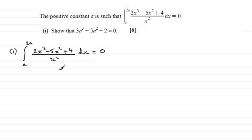Now we need to get this in the form that is suitable for integrating and that means I've got to get rid of this x squared. There's two ways I can do this. I can rewrite this as 2x cubed minus 5x squared plus 4 all multiplied by x to the power minus 2 and then expand the brackets.